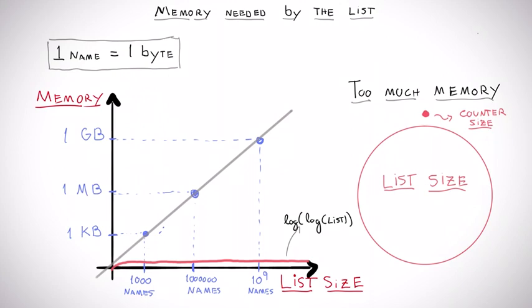Log of log is a function that grows incredibly slowly. In practice, it means that the memory it needs to count a single unique visitor or a billion is almost the same, which is in the case of hyperloglog, around two kilobytes.